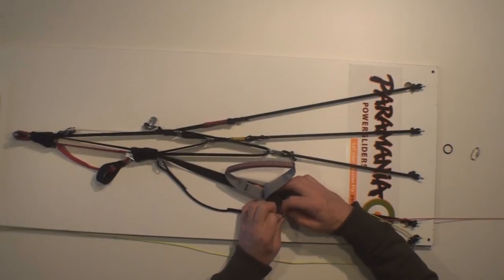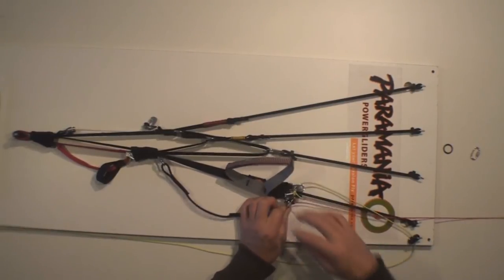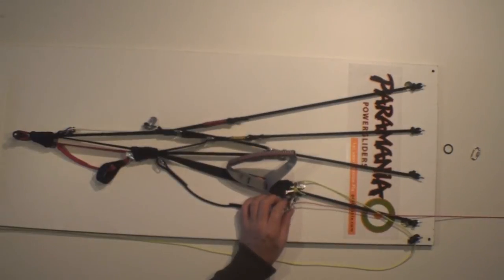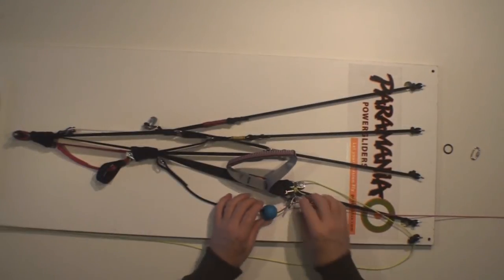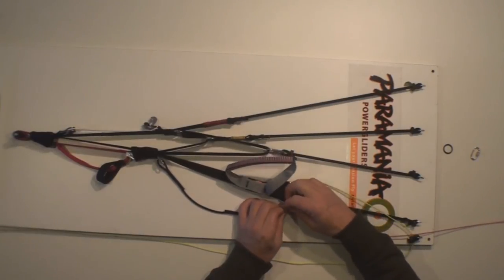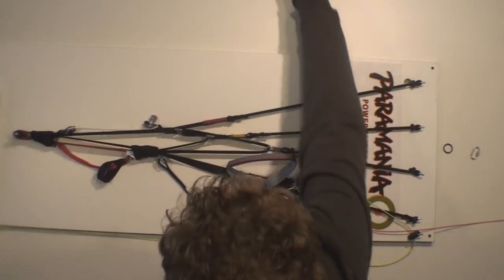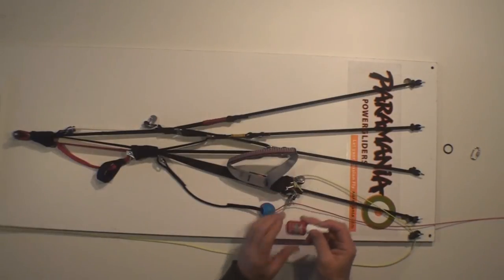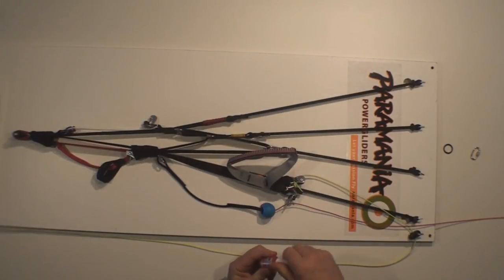Now, one thing I would suggest is that we take a little bit of Loctite. And we'll show that now. This is the same with all our mallions. There you are. The product, Loctite. The super glue would do, but Loctite's the best.